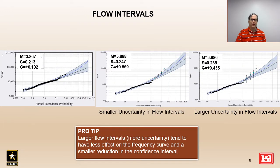When it comes to flow intervals, the amount of influence the flow interval has on the fit of the frequency curve depends in part on the uncertainty in the flow interval. In this example we have three plots to compare. The far left includes just the systematic data. The middle includes several historic flood events modeled as flow intervals with a relatively small uncertainty. The far right has the same historic flood events modeled as flow intervals but with a much larger uncertainty. You can see the difference in influence by comparing the fit of the curve and the computed parameters.